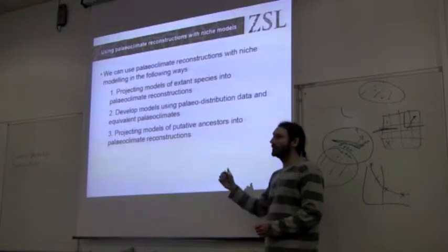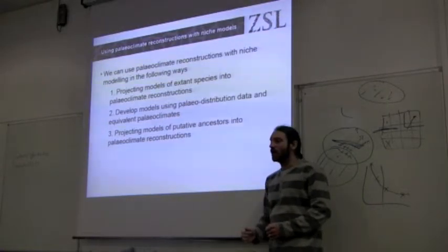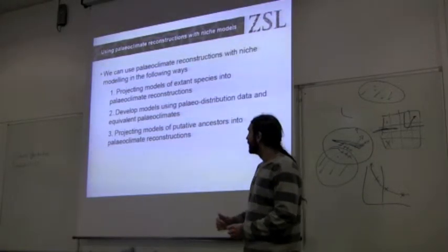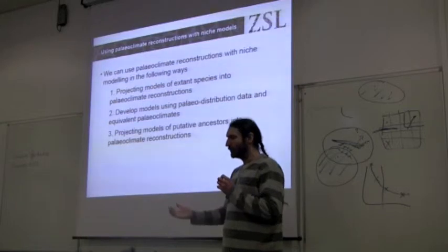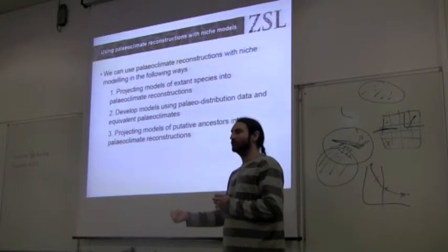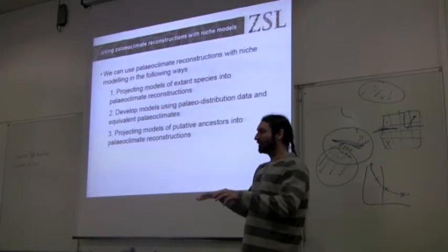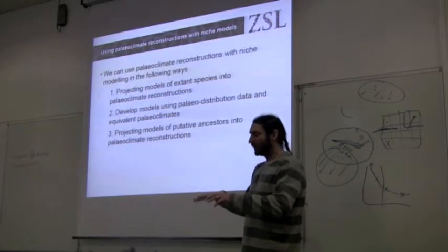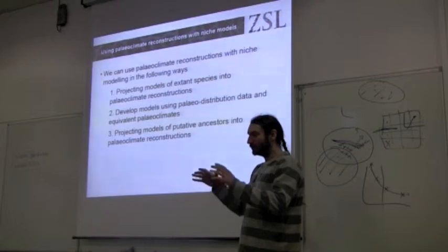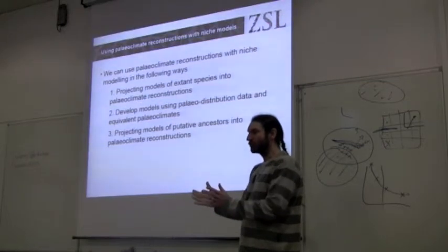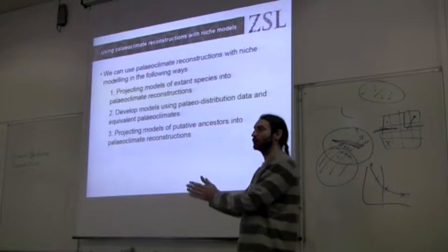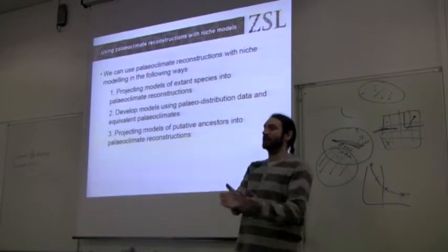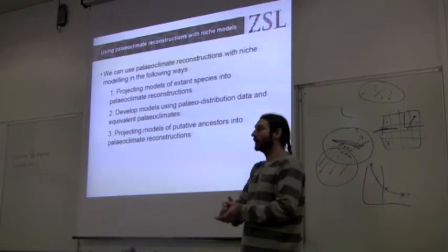The second method is where you have good fossil evidence, locations of your target organism positioned in history, and climate data for that same time period — so you build a model based purely on historical data. The third approach involves reconstructing ancestral niche models and projecting those back in time.